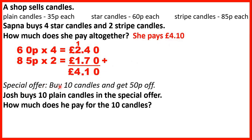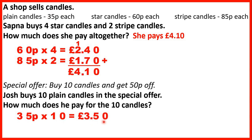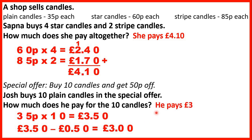Special offer: buy 10 candles and get 50p off. Josh buys 10 plain candles in the special offer. How much does he pay? Plain candles are 35p each, so if he buys 10, 35p times 10 is £3.50. But because he's bought 10 he can get 50p off, and £3.50 minus 50p is £3. So that's how much he pays for the 10 candles.